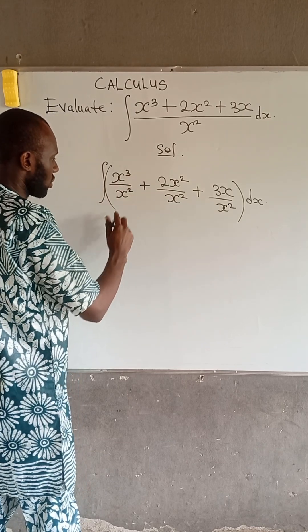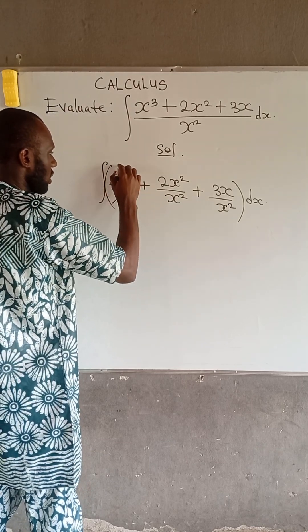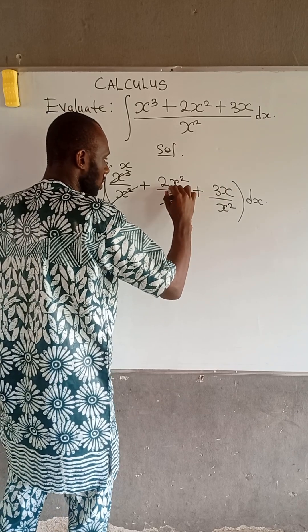Now, at this point, we have x cubed here. So if I cancel out x squared, I will be left with x. Also, x squared, we cancel out x squared.